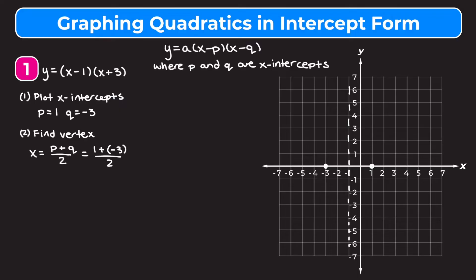One plus negative three is negative two, divided by two, which gives us an x-coordinate of the vertex of negative one. Now we want to find the y-coordinate by plugging the x-coordinate back into our original quadratic and solving for y.